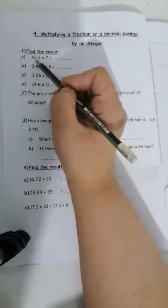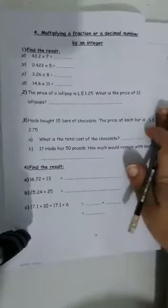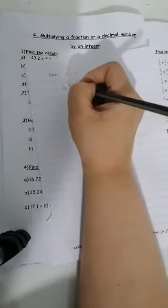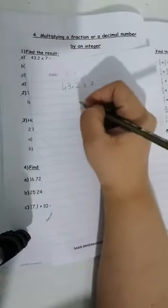Let's see how I will do this. I have the first example, 43.2 times 7. Let's take it with the work out.